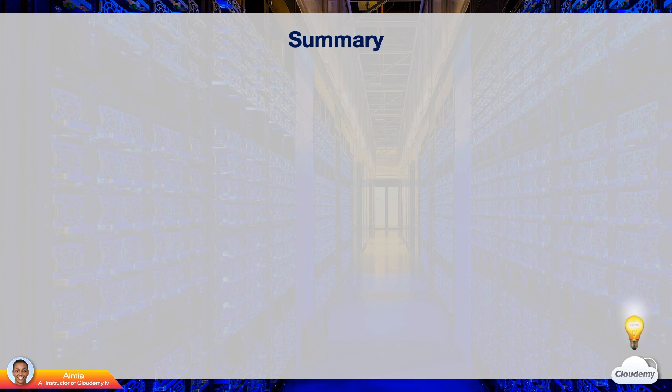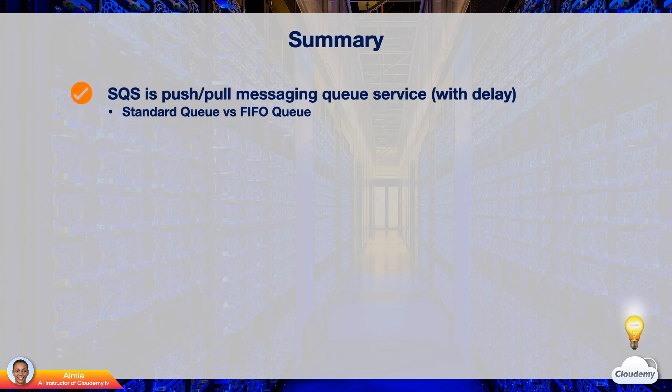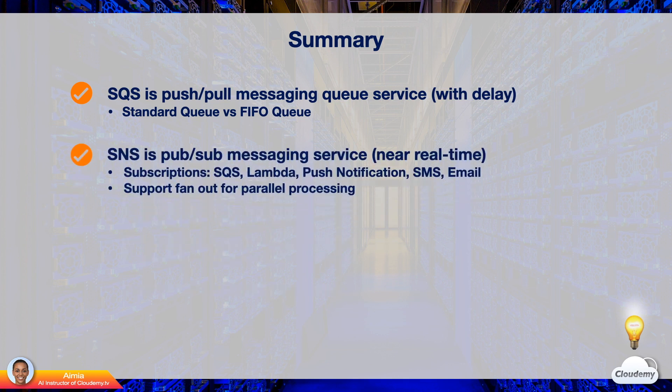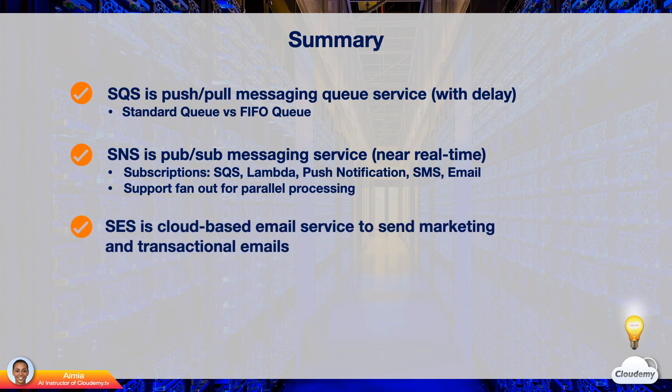In this episode, we've learned different AWS messaging services: SQS, SNS, and SES. Simple Queue Service — SQS is a push-pull messaging queue service. A producer sends the message to a message queue; a consumer constantly checks for new messages and processes them. The processing time can vary, and messages can be processed with some delay. Simple Notification Service — SNS is a pub-sub messaging service. A publisher sends messages to a topic, and SNS delivers the messages to a list of subscribers in near real-time. Simple Email Service — SES is an AWS email service to send custom emails such as marketing emails and transactional notifications.